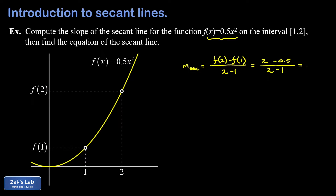Cleaning things up, the numerator gives us 1.5 (or 3 halves), and the denominator is 1. Dividing by 1 doesn't change anything, so the slope of the secant line is 1.5.